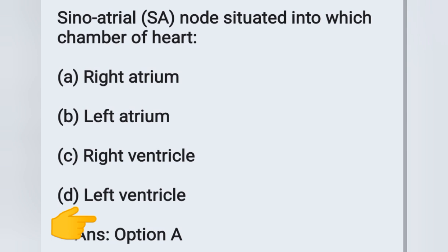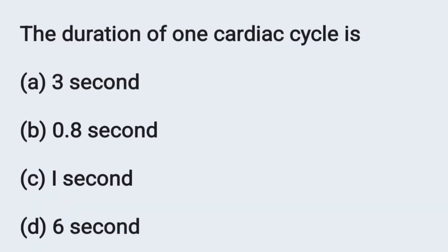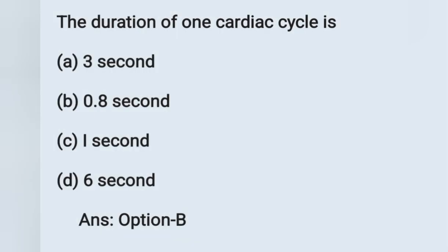Next question: the duration of one cardiac cycle is how long? Options: (a) three seconds, (b) 0.8 seconds, (c) one second, (d) six seconds. The normal duration of one cardiac cycle is 0.8 seconds. Option B is the correct answer.